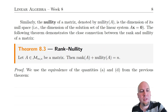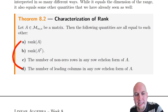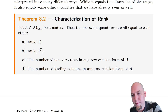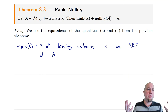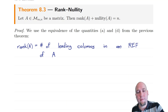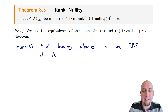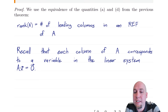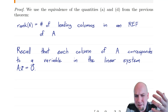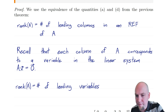Where this comes from: if we scroll back to the theorem from the previous lecture, we learned that the rank of a matrix equals the number of leading columns in any row echelon form of that matrix. We're going to use that in the proof of this nullity theorem. The rank of a matrix is the number of leading columns in a row echelon form of A. If we remember that there's a natural correspondence between the columns of a matrix and the variables in a linear system, we can stitch this together: rank of A is the number of leading variables in the linear system Ax=0.